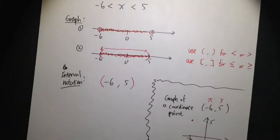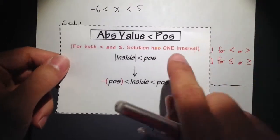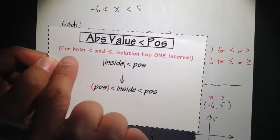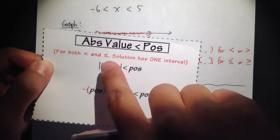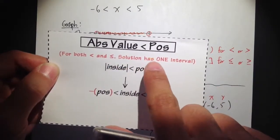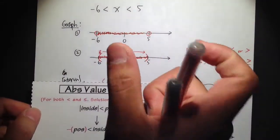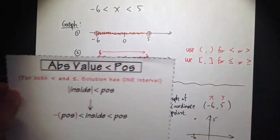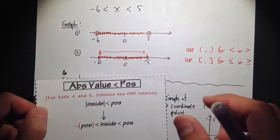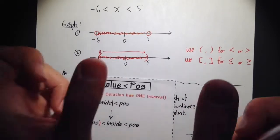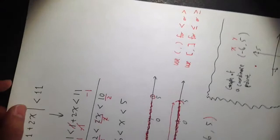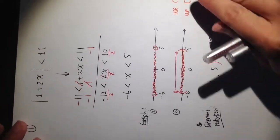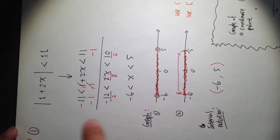Notice that for the less than and less than or equal to case, the solution will just have one interval — we just have one piece of interval. Later on you will see solutions that have two intervals. But this is it for now — just focus on this.